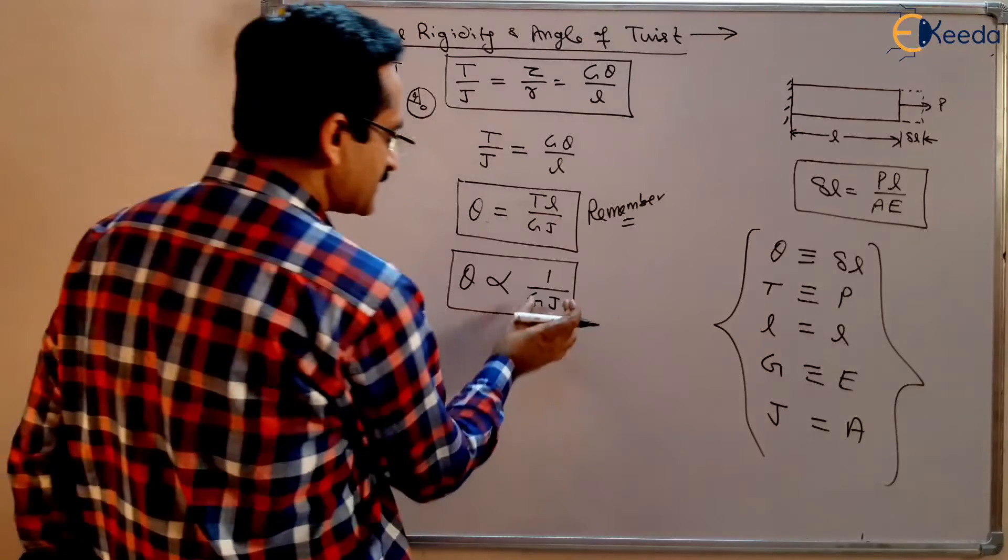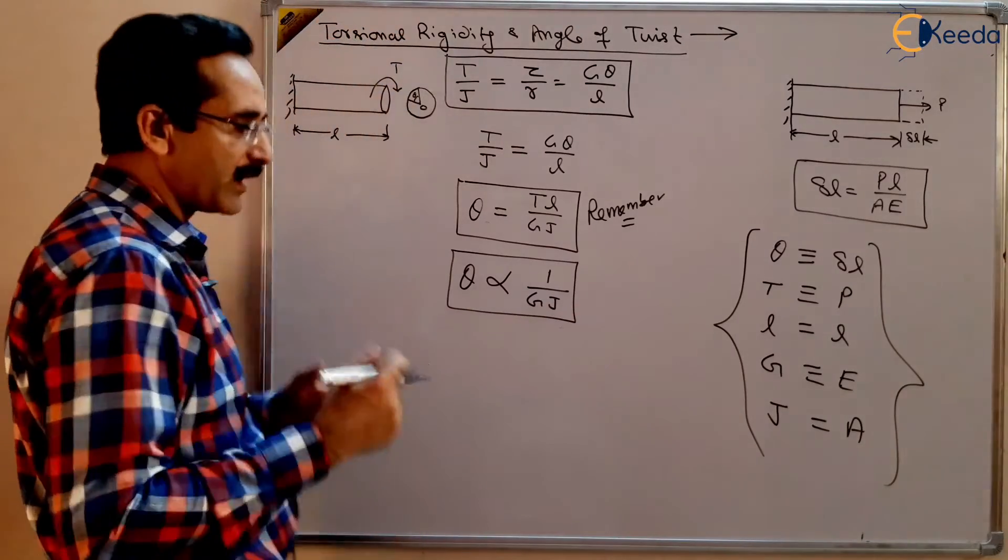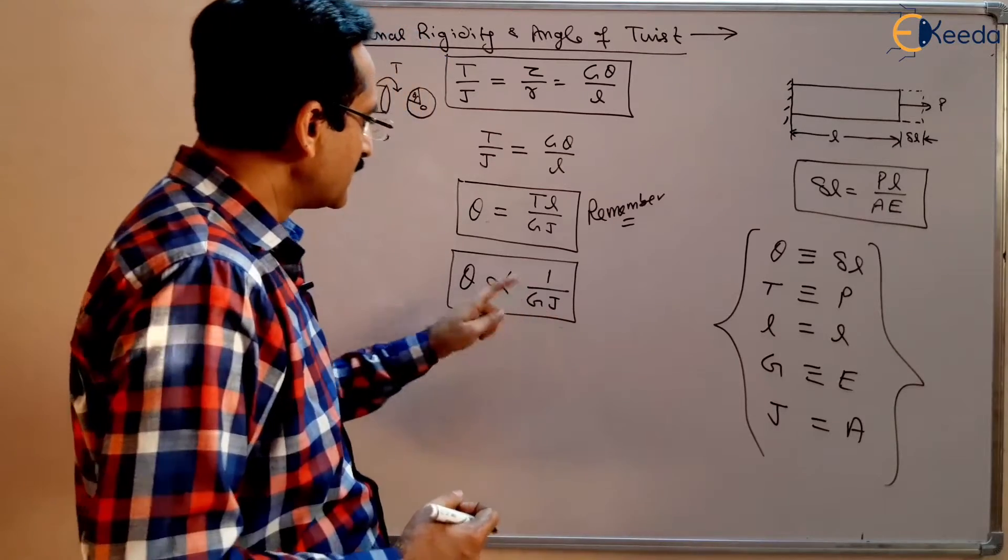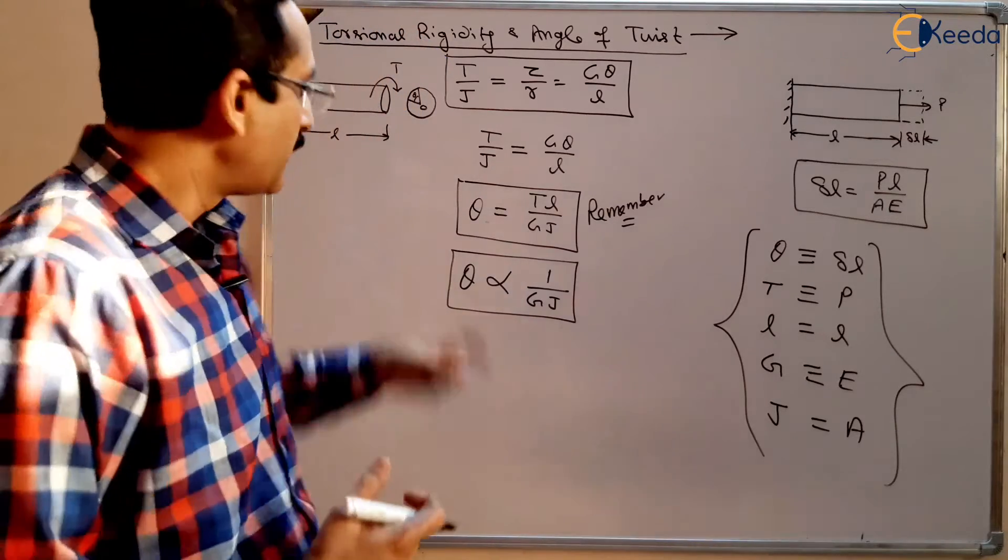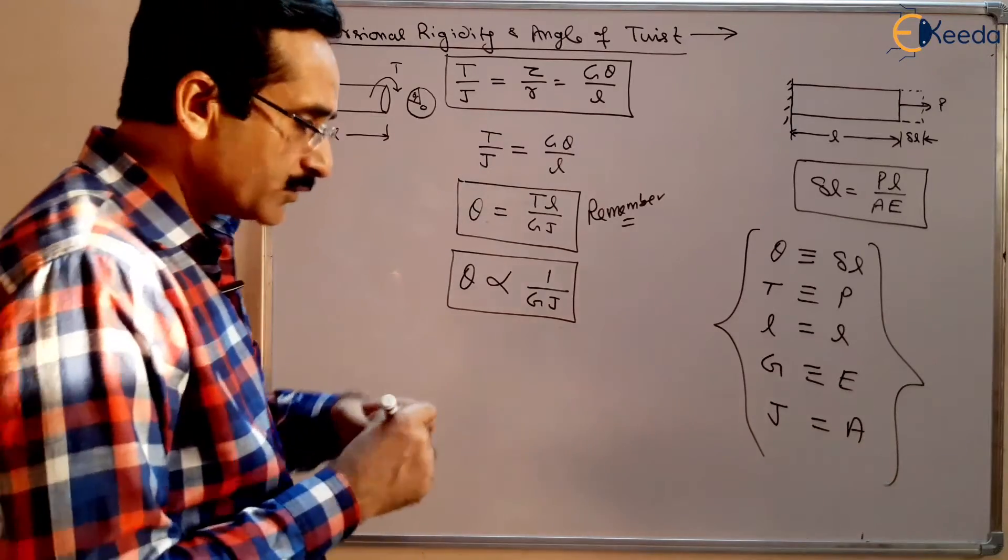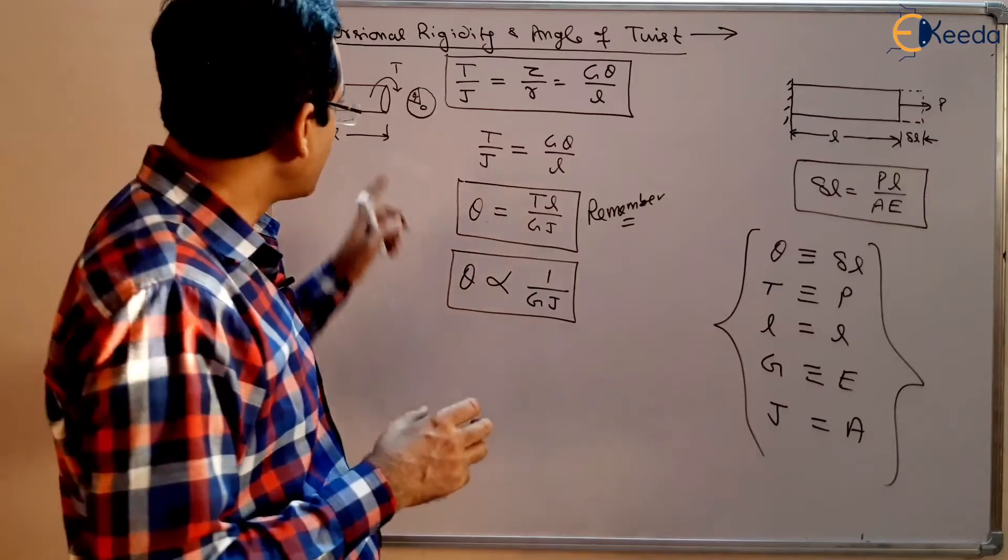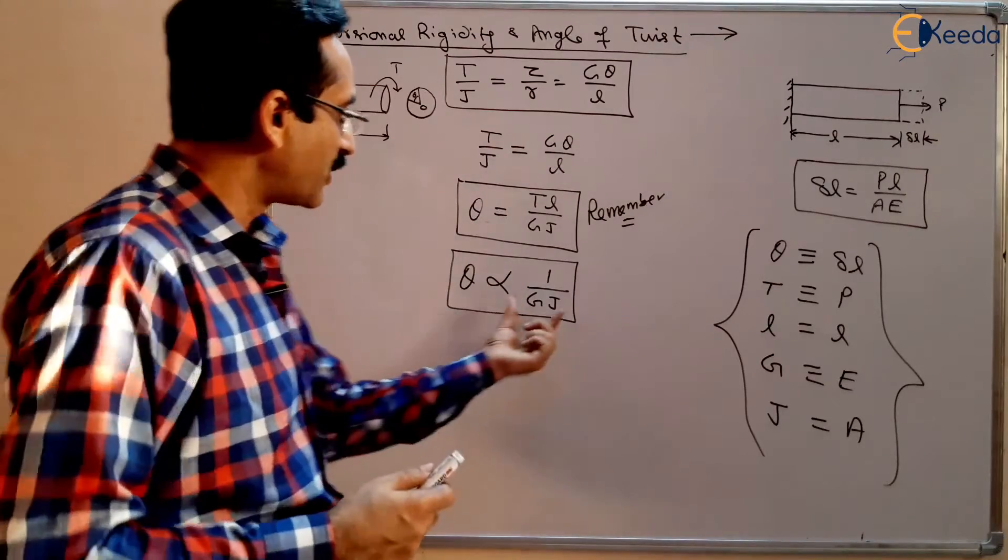If this GJ is higher, modulus of rigidity multiplied by polar moment of inertia, if this GJ term is higher, angle of twist is lower. You are not able to twist the shaft to a sufficient amount if this quantity is higher.